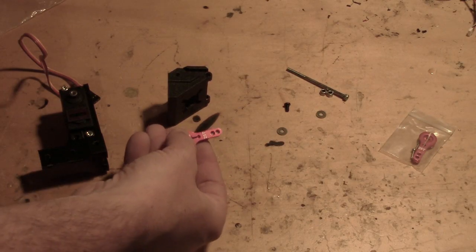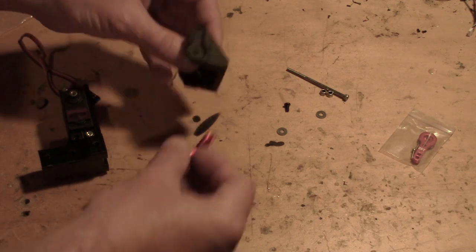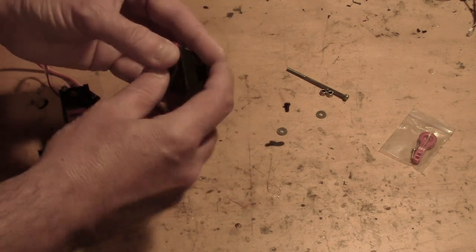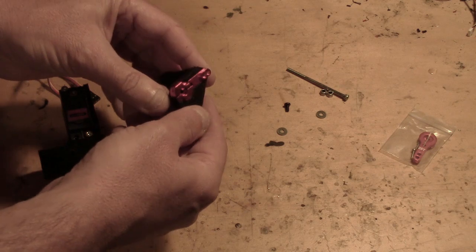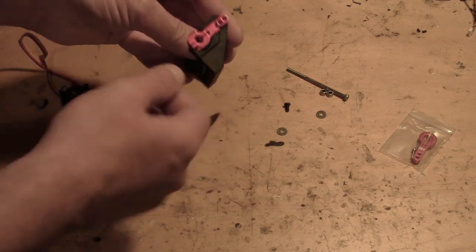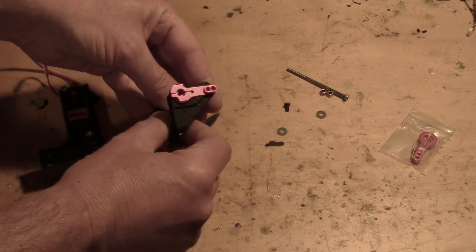So then you want to grab one of your 25T servo horns which should just snap nicely into place in the 3D print. I've been mounting them kind of reverse like you can see here.